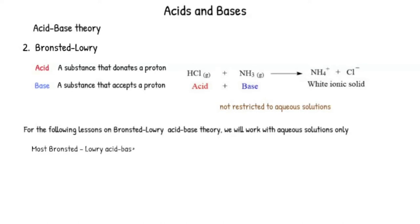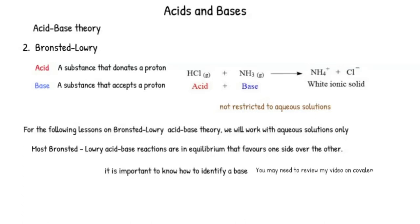Most Bronsted-Lowry acid base reactions are in equilibrium that favors one side over the other. It is important to know how to identify a base. You may need to review my video on covalent molecules. It is also important to identify strong acids from weak acids.